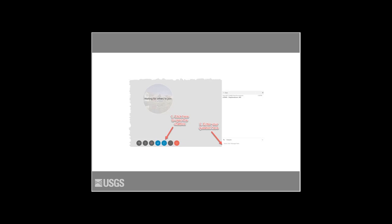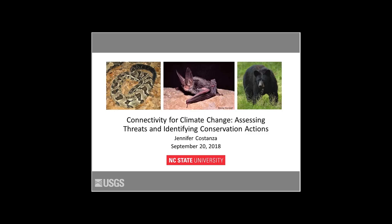Thanks, John. It's my privilege to introduce Jen Costanza as our speaker today. Dr. Costanza is a research assistant professor in the Department of Forestry and Environmental Resources at NC State. Her research seeks to better understand recent and potential future threats to ecosystems and landscapes, including direct and indirect effects of climate change, land use, and altered disturbance regimes. She uses simulation models to project future landscape change, in addition to a variety of quantitative and qualitative methods. She works to produce knowledge that can be used by natural resource and conservation practitioners to make better management and policy decisions. It's a privilege to have her speak today.